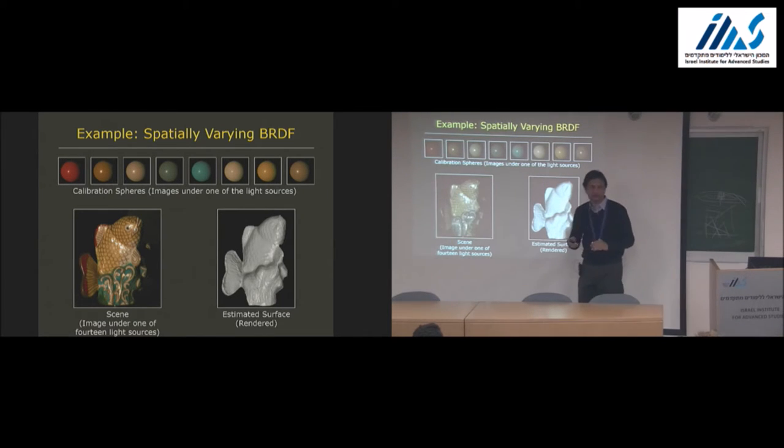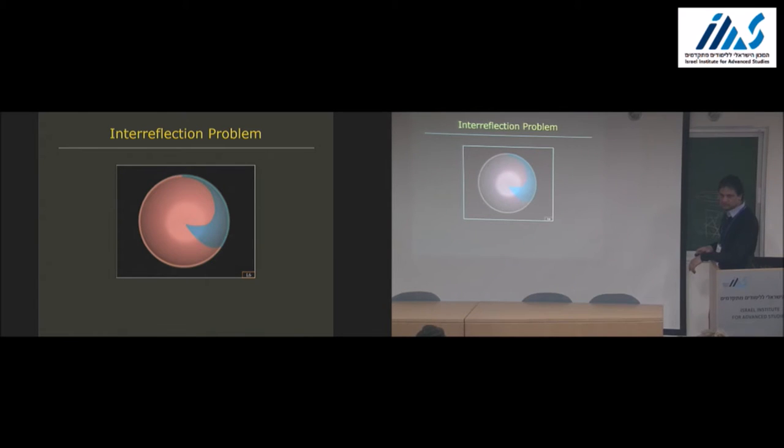But there is one thing that we have swept under the rug here, which is interesting - the interreflection problem. The interreflection problem is the following. You have this concave bowl. If you look at it, our assumption is that each point is being lit by the light source directly. But that point is also being lit by all other points on the surface. We have a chicken and egg problem in that we don't know the shape of the object, so we have no way of estimating what the contribution of all the other points is.